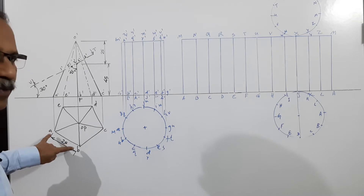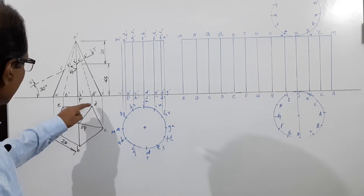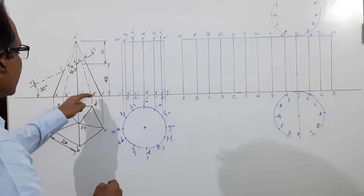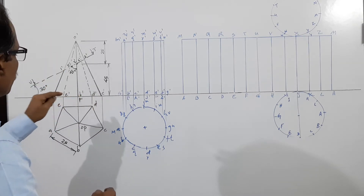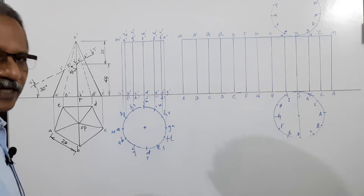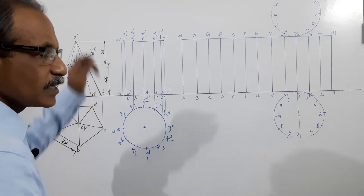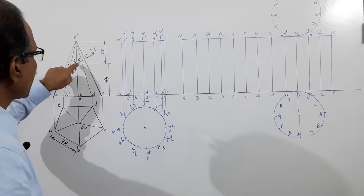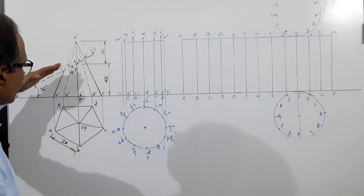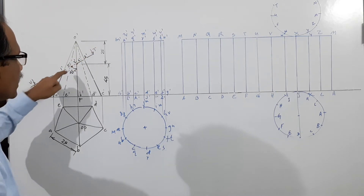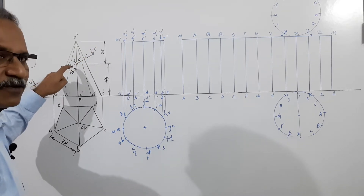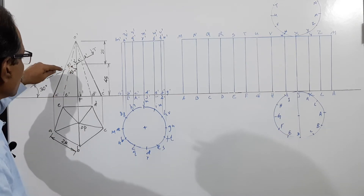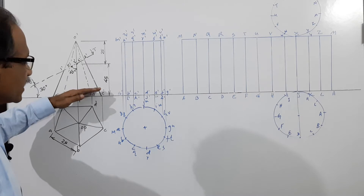Side 25 mm: A, B, C, D, E. I have projected the elevation A dash, B dash, C dash, D dash, E dash. Then I have located a point 25 mm below the apex, and through that point I have drawn a cutting plane making 30 degrees to HP, which in fact makes 60 degrees to the axis.